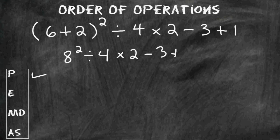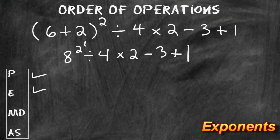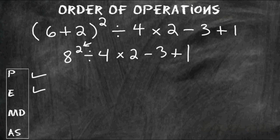The next step that we have to do for the order of operations are any exponents. We have an exponent right here attached to the number 8, and 8 to the second power is 64. Once again we have to bring everything down that we did not touch from the previous step.